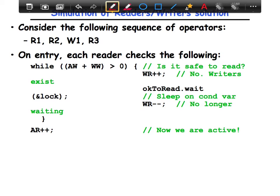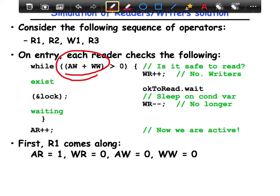The first thing is on each entry, the readers check if writers in the system are active or waiting. And if not, then you increment the waiting reader variable and you sleep.